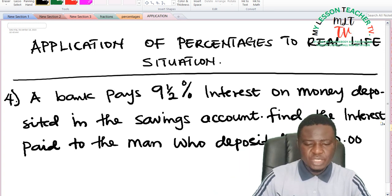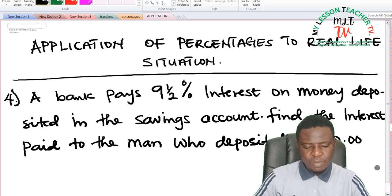Question 4 on application of percentages to real life situation. Question 4 says a bank pays nine and a half percent interest on money deposited in the savings account. Find the interest paid to the man who deposited 420 naira.